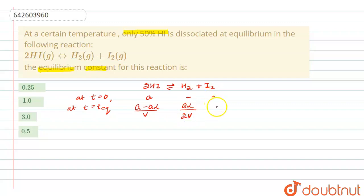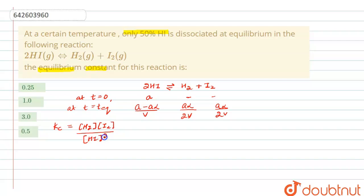Now let's write the expression for Kc. It will be [H₂][I₂] divided by [HI]², with the square because the coefficient of HI is 2. Substituting the values: (aα/2v)² divided by (a − aα/v)².